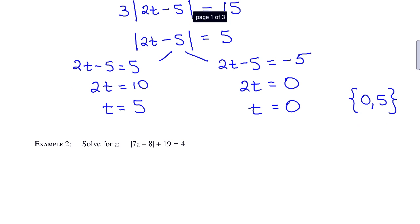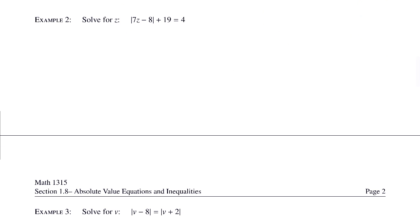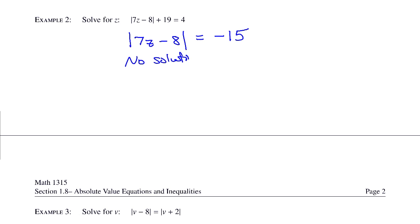Let's look at example 2. Solve for z: the absolute value of 7z minus 8 plus 19 is equal to 4. I'll start by moving the 19 to the other side. When I do that, I have 4 minus 19 which equals negative 15. Here we have the absolute value of something equal to a negative, which cannot happen. So we have no solution, and the solution set is the empty set.